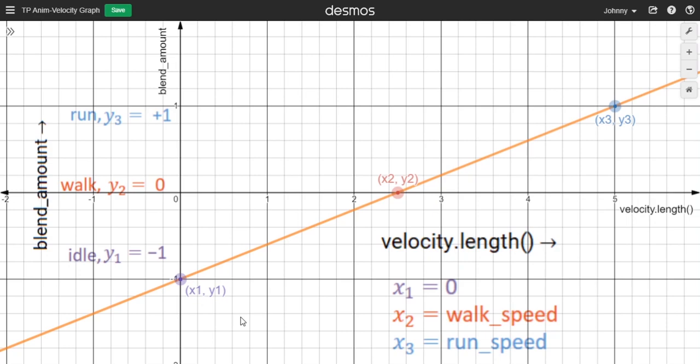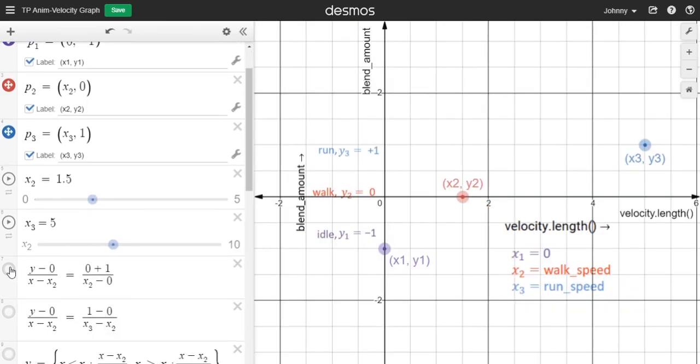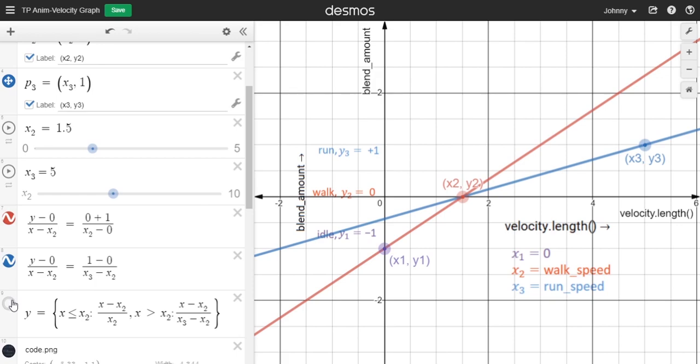But the single straight line would only work if the walk speed falls under the straight line. But in reality, the walk speed could be different. So what I did was I created two straight lines, one from idle to walk and another from walk to run. And if I combine the two straight lines with the piecewise function, I'll get something like this.